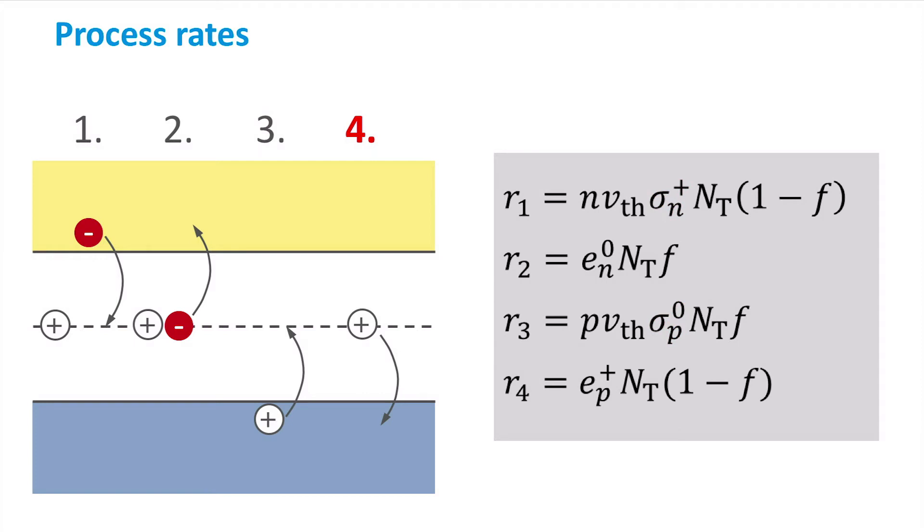The fourth process is again emission of a charge carrier, which means it has a similar expression as the second process. Since this is a process in which a hole is emitted instead of an electron, the emission coefficient is now related to holes and has a positive charge state, as a hole can only be emitted from a donor-like trap if this trap is not occupied by an electron.